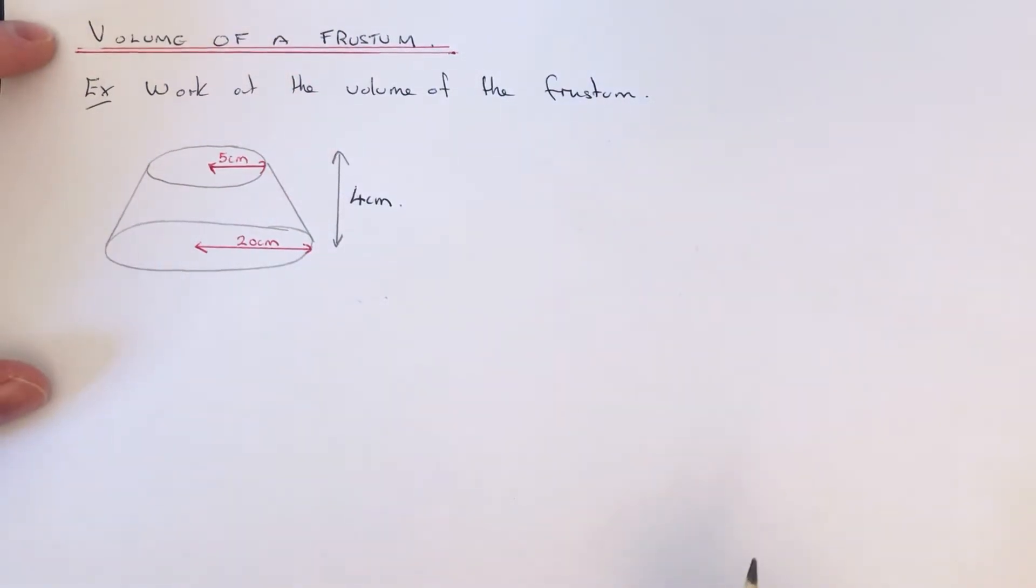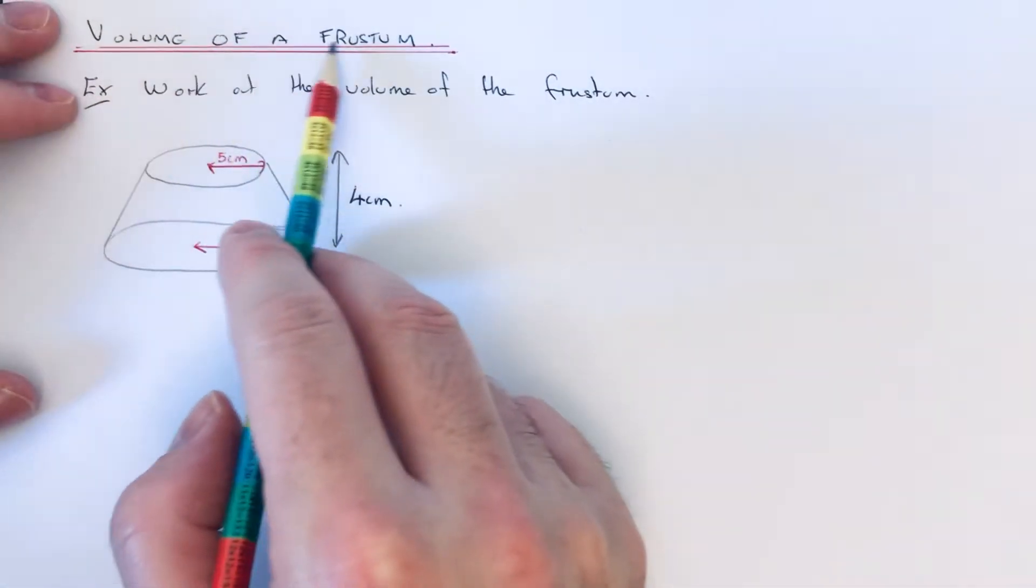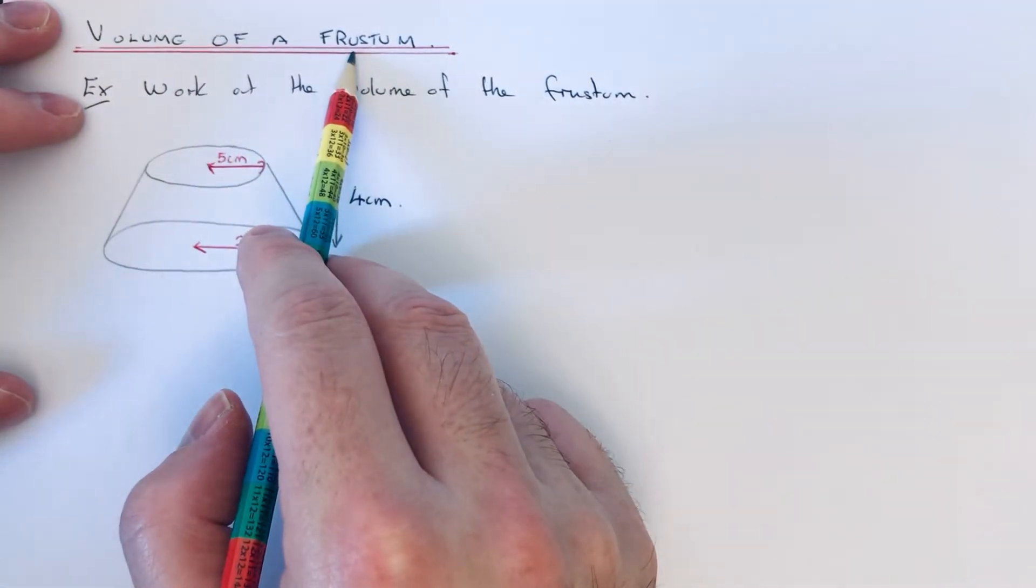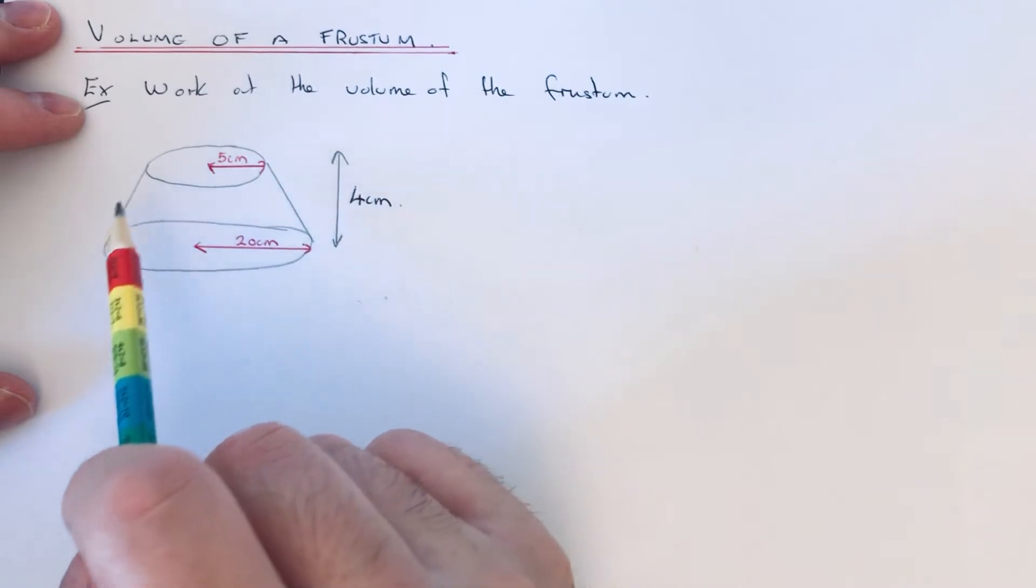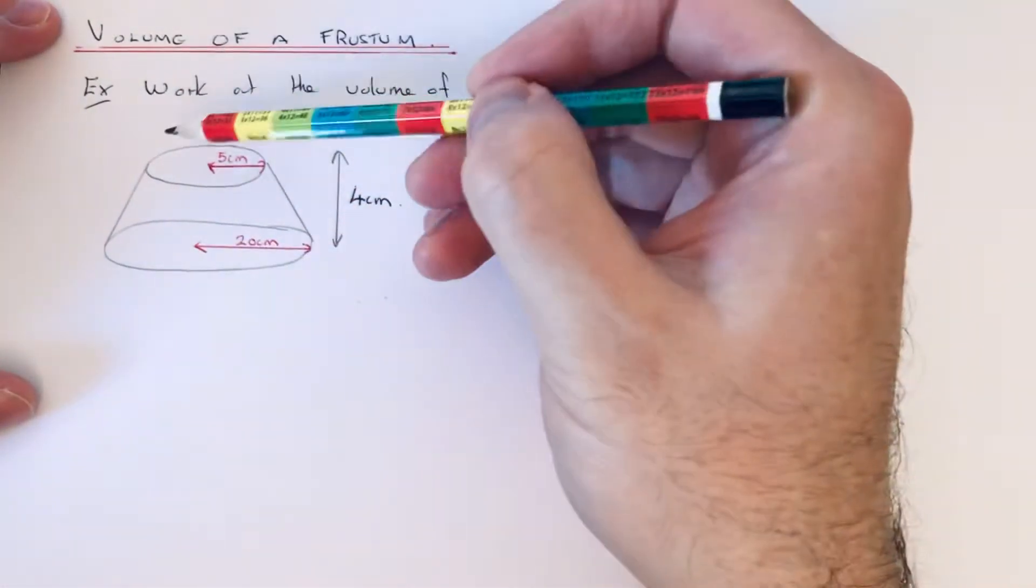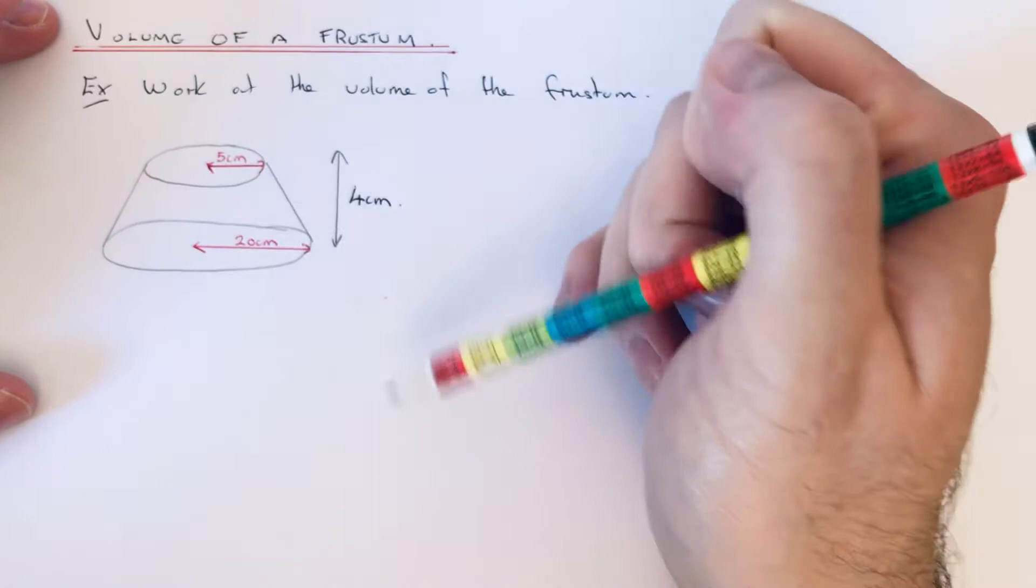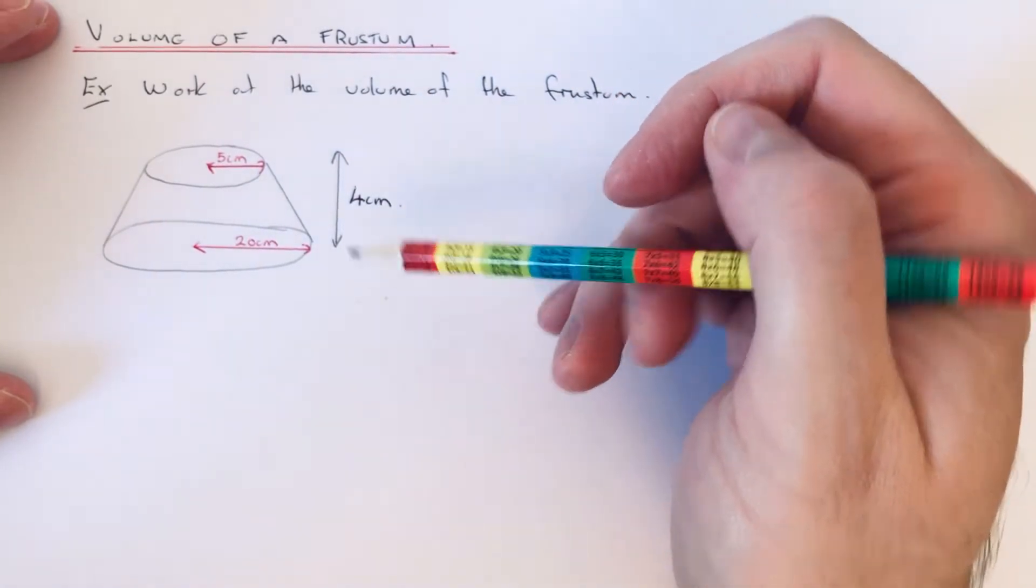Hi guys, welcome back. This is Maths 3000. Today I'm going to show you how to work out the volume of a frustum. So a frustum is a cone with the top of the cone sliced off.